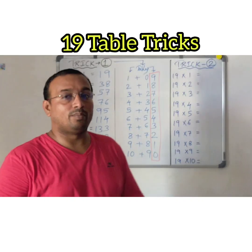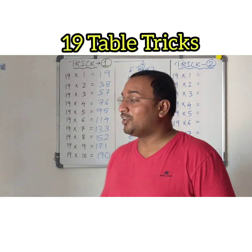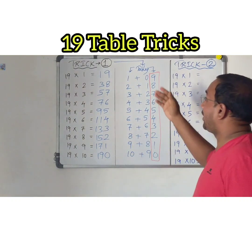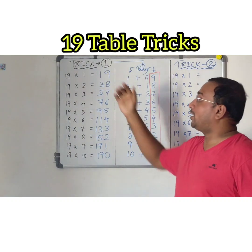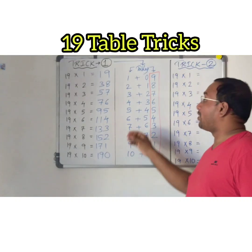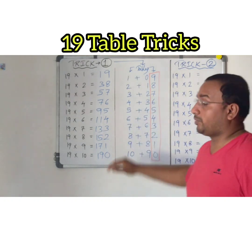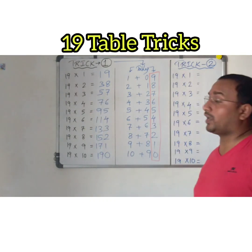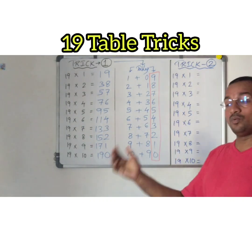In this way, I have completed the 19 table using a simple trick — writing the 1 and 9 tables. So this is what trick 1 is.